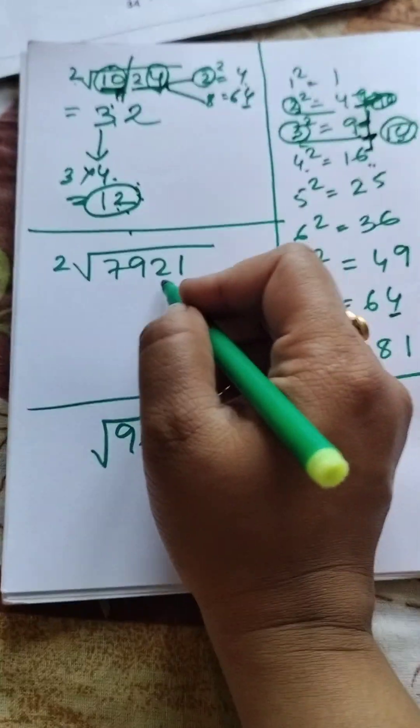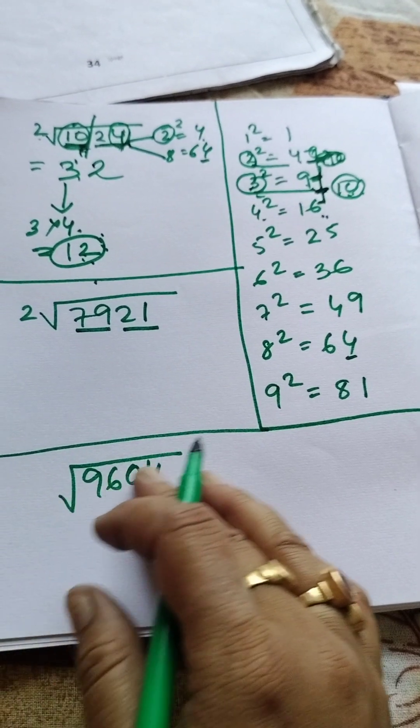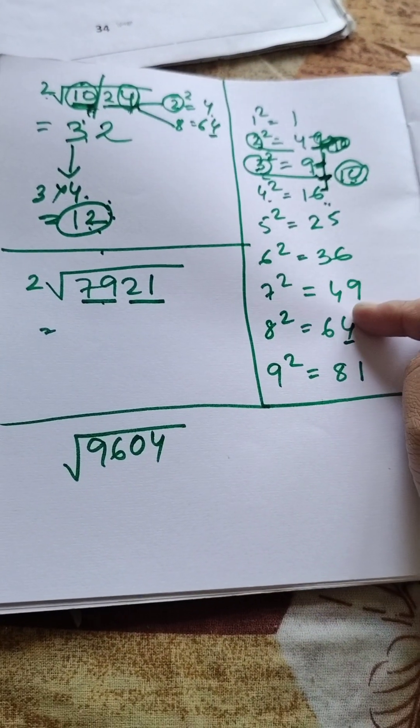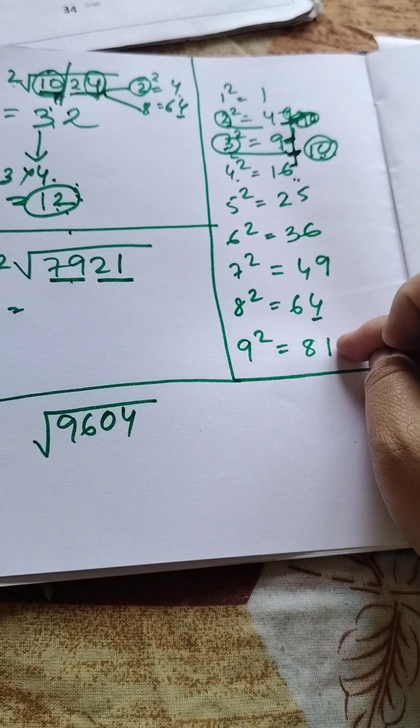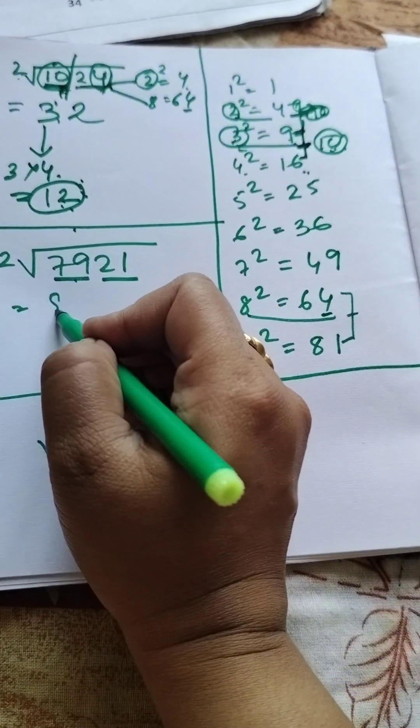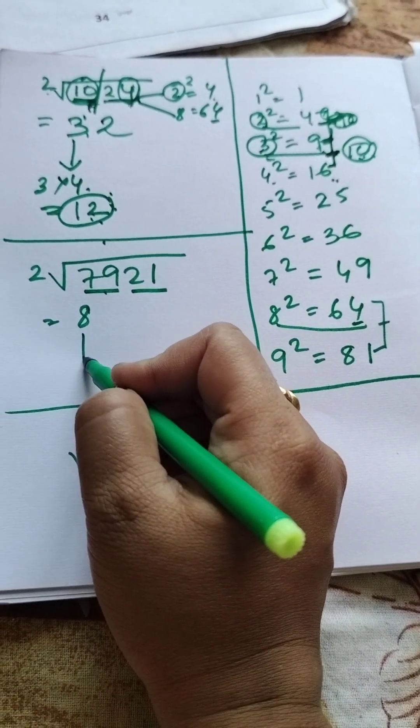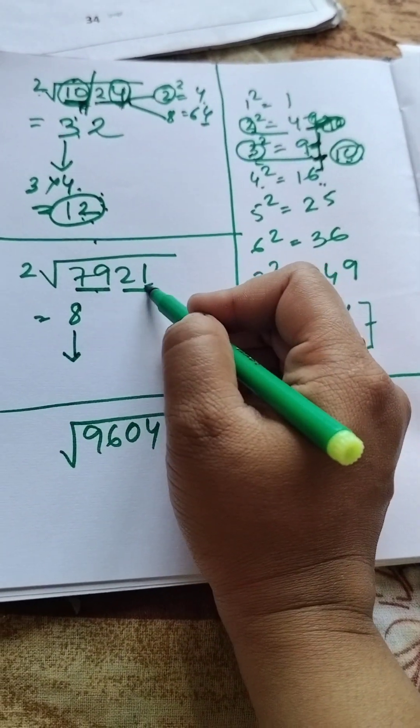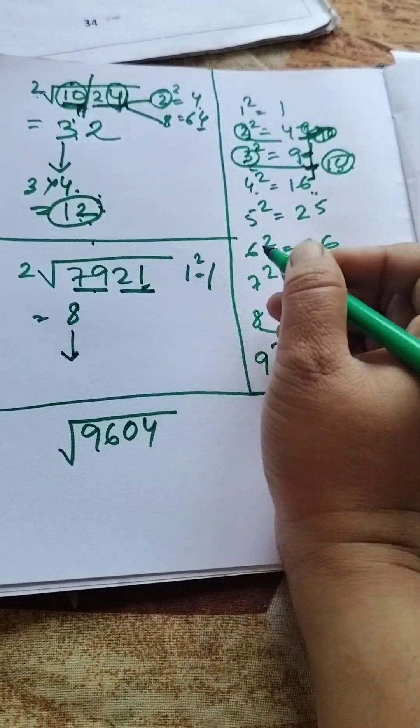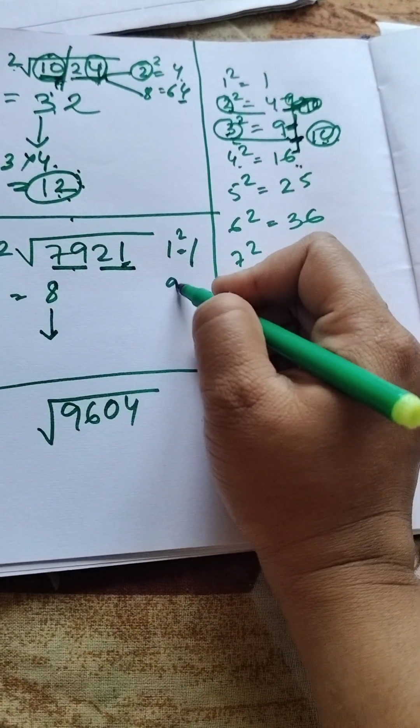This one. If it is 79, where does it come? Look, it is in 64 and in 81. For this, we will write 8. Now we will decide the last number. 1 is 1, 1 is 1, and 9 is 81.